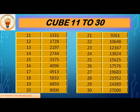Now let's do it from 21 to 30. 21 cube is 9261, 22 cube is 10648, 23 cube is 12167, 24 cube is 13824, 25 cube is 15625, 26 cube is 17576, 27 cube is 19683, 28 cube is 21952, 29 cube is 24389, and 30 cube is 27000.